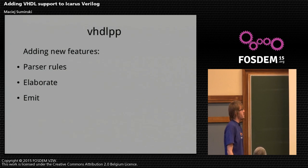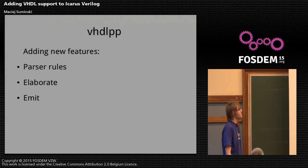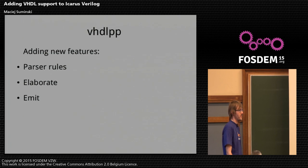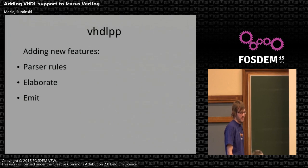Now that we know how it works, there are just three basic steps to implement a missing feature in the VHDL frontend. First, we need to describe rules for parsing — we need to know how the expression looks in the input data. Then we need to define functions for elaboration, giving it meaning and knowing how to instantiate it for at least basic checks. And then the emit part: we need to find the SystemVerilog counterpart, which can sometimes be very tricky and may require using VPI to complete the task.